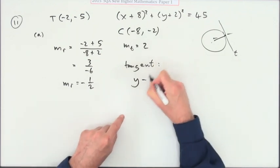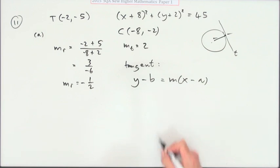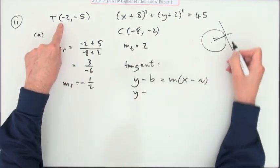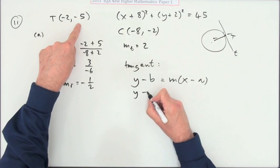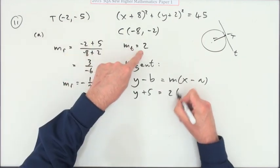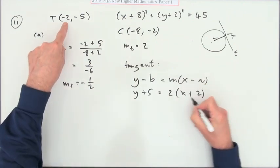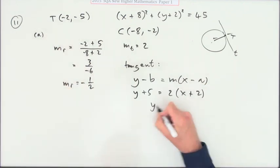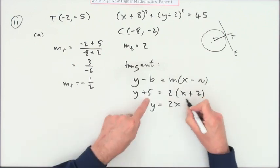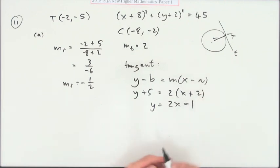Will be y minus b is mx minus a. So y minus the y-coordinate of the point—that was the point T—y plus 5, since it's taken by negative 5, will be 2 times x minus the x-coordinate, so it'll be plus 2 because you're subtracting negative 2. That looks like it'll work out quite nicely: 2x plus 4 minus 5, so y equals 2x minus 1.